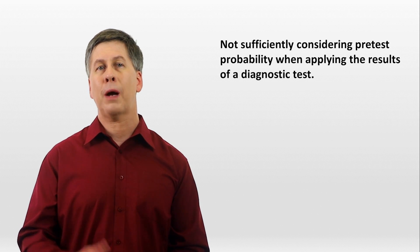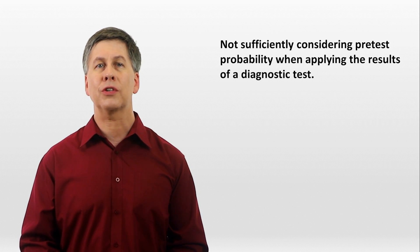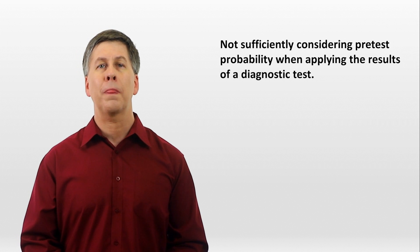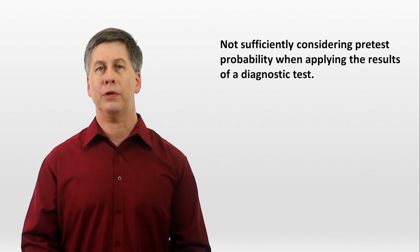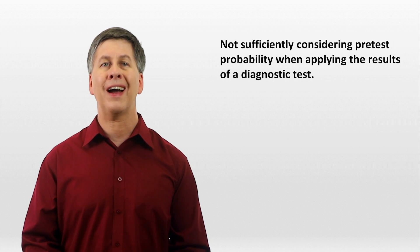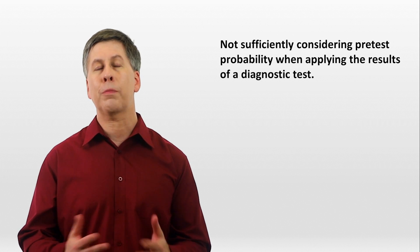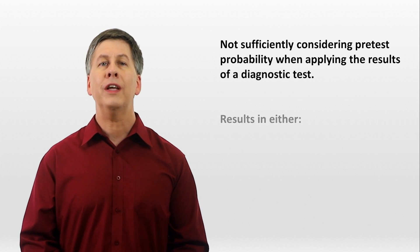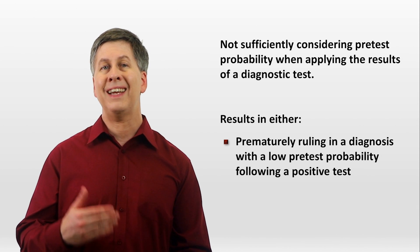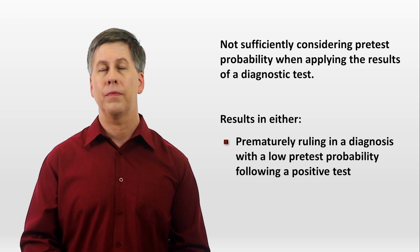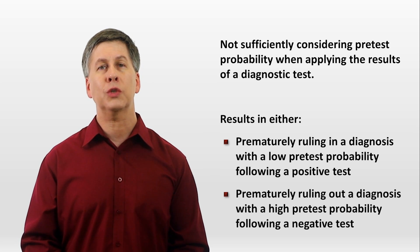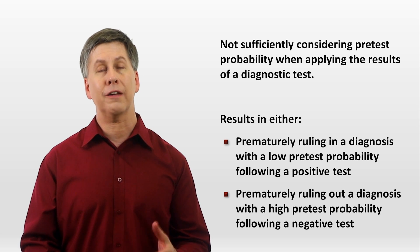And the last error I'll discuss today is related to base rate neglect, when clinicians do not sufficiently consider the pretest probability when applying the results of a diagnostic test. In other words, having a post-test probability that's independent of the pretest probability, which can occur when the clinician treats all items on the differential as having grossly similar probabilities. This results in either prematurely ruling in a diagnosis with a low pretest probability following a positive test, or prematurely ruling out a diagnosis with a high pretest probability following a negative test.